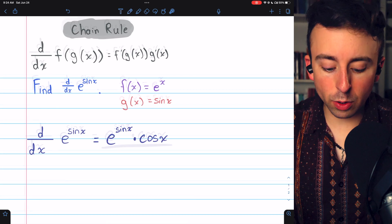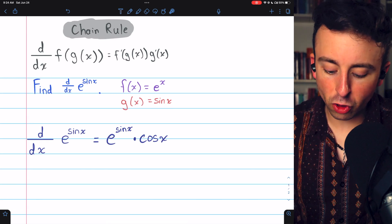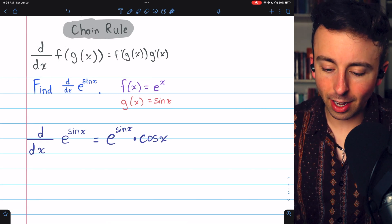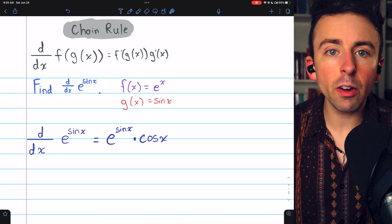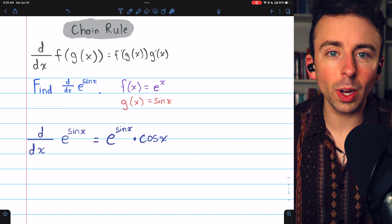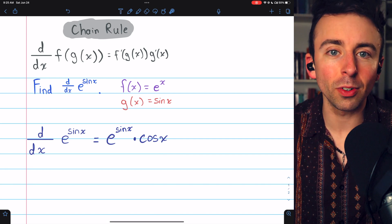So the derivative of e to the sine x by the chain rule is e to the sine x times cosine x. Let me know in the comments if you have any questions, and check out my Calculus 1 course and Calculus 1 exercises playlists in the description for more.